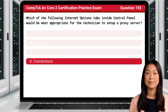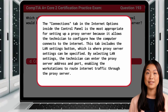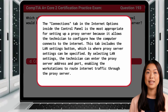The answer is D: Connections. The Connections tab in Internet Options inside the control panel is most appropriate for setting up a proxy server because it allows the technician to configure how the computer connects to the internet. This tab includes the LAN Settings button, where proxy server settings can be specified. By selecting LAN Settings, the technician can enter the proxy server address and port, enabling workstations to route internet traffic through the proxy server.